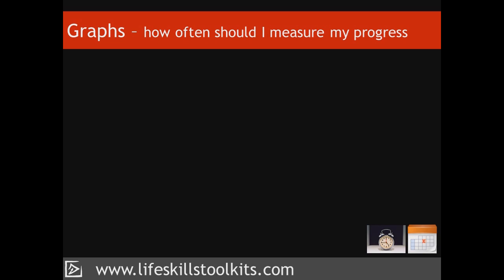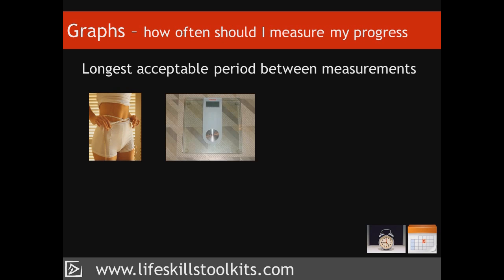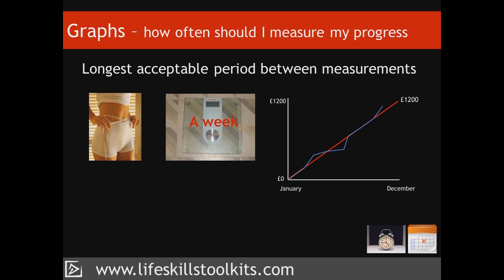When it comes to deciding how often to measure your progress, you need to consider the longest acceptable period between measurements. For example, if you're trying to lose weight, the convention is to weigh yourself weekly due to the daily fluctuations in our weight — a week is therefore the longest acceptable period between measurements. If you're saving money with a regular monthly deposit, the longest acceptable period would be a month. And in the case of writing 300 words a day, the longest acceptable period between measurements is, you guessed it, a day.